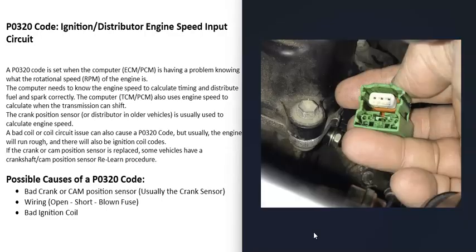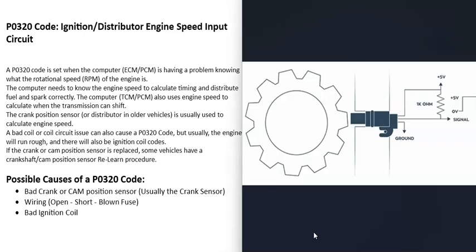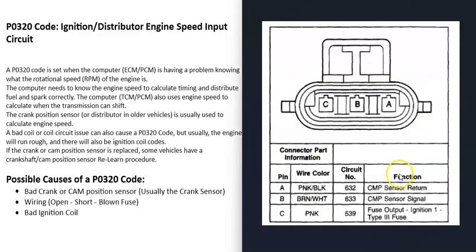The next possible cause is a wiring issue. If the crankshaft or camshaft position sensor wiring has an open, a short, or a blown fuse, that's going to cause problems. You can get wiring schematics for your particular vehicle to check the wiring. It's very common for five volts to be going to these circuits — with the key on, one pin should be getting five volts, there should be a good ground wire, and there's also a signal wire going back to the computer. Using a multimeter and schematics, you can check all those pins for any open or short.